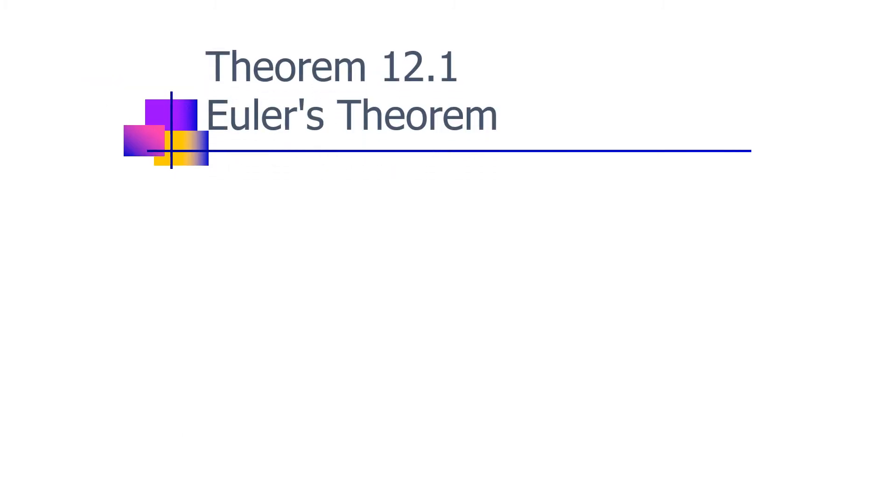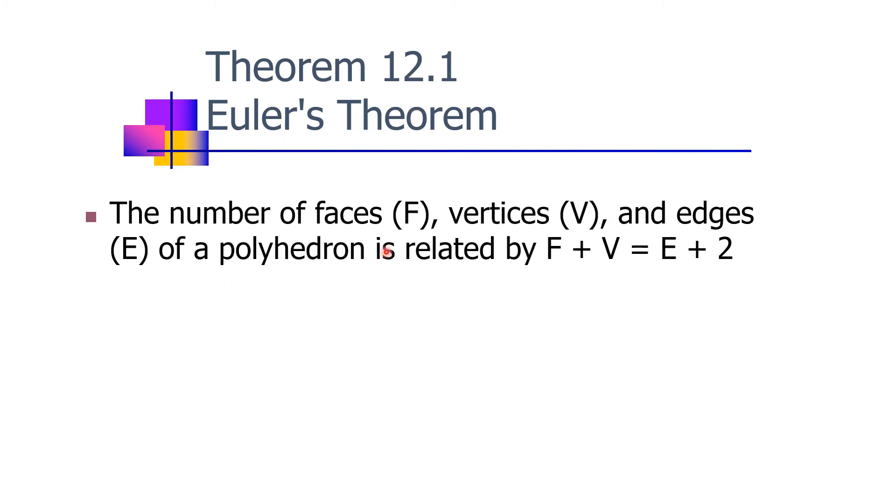Perhaps you know who is Euler. The number of faces F, vertices V, and edges E of a polyhedron is related by F plus V equals E plus 2.